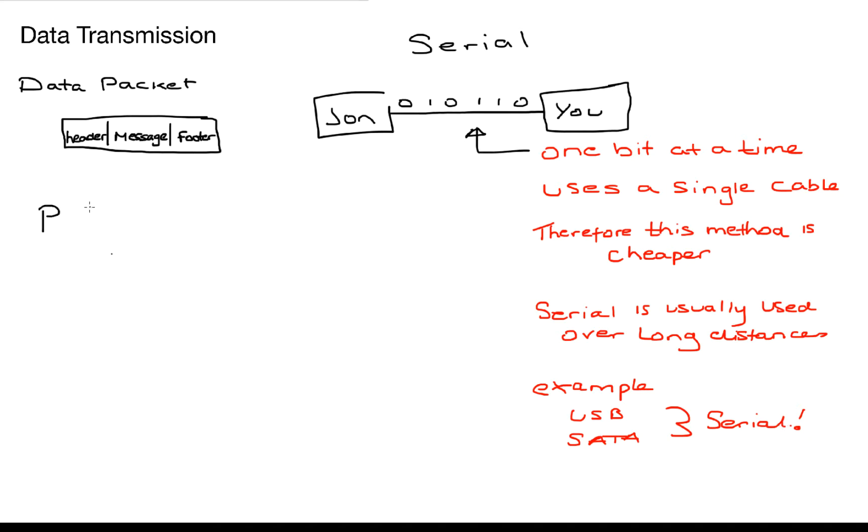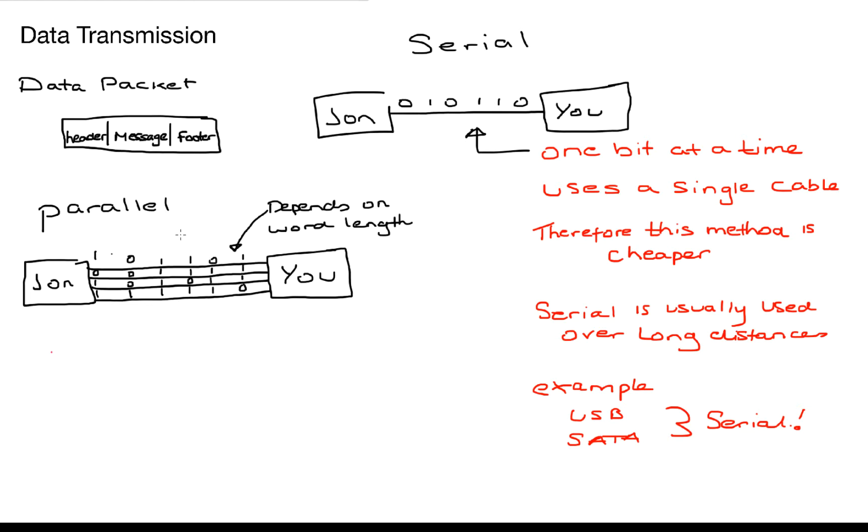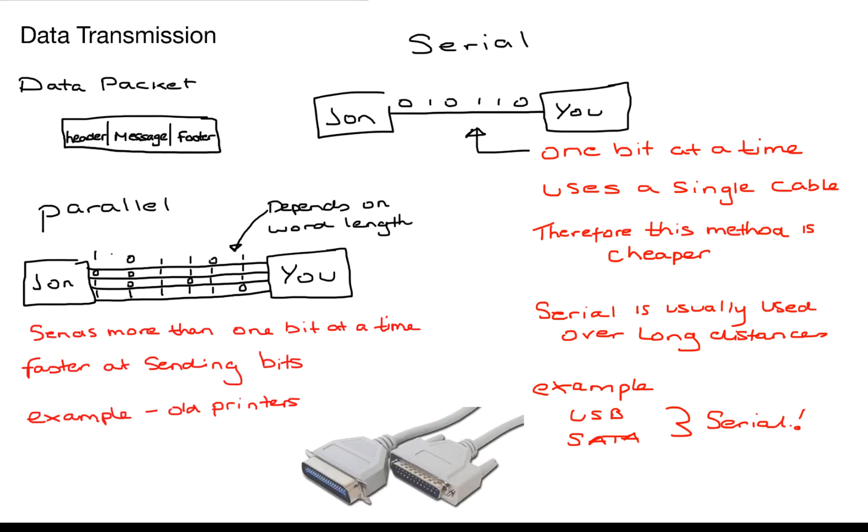So what about parallel then? Parallel just means we've got multiple cables in order to send our data down. We can send our data more than one bit at a time but it all depends on your word length. So if you've got a 32-bit system you should have 32 tiny wires sending bits of data down at the same time and this will mean that it's faster at sending bits because you've got more opportunity to send more bits at one time.